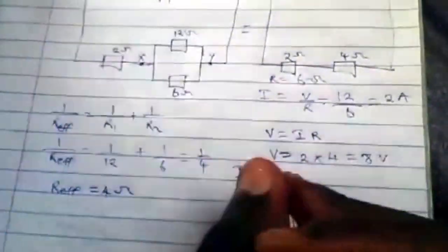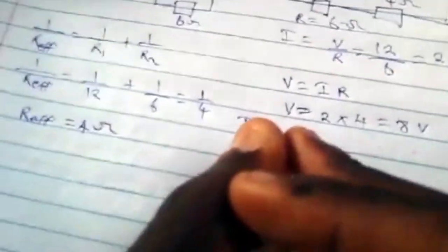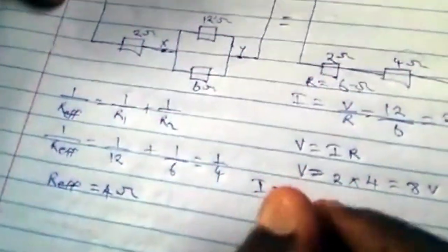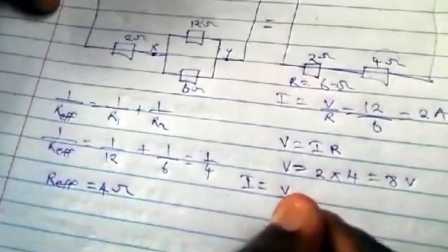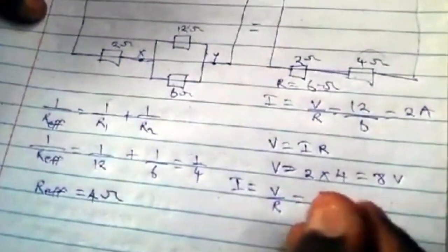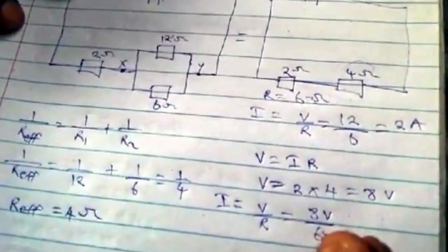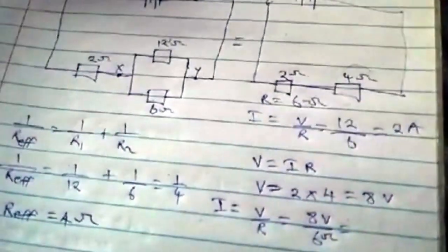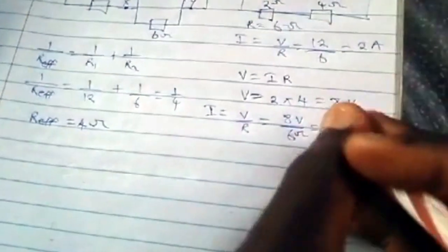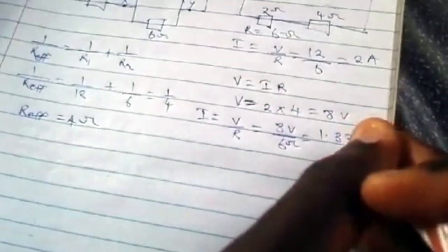The current will equal voltage over R. The voltage is 8 volts over R, which is 6 ohms. The answer is 8 over 6, that's 1.33 amps.